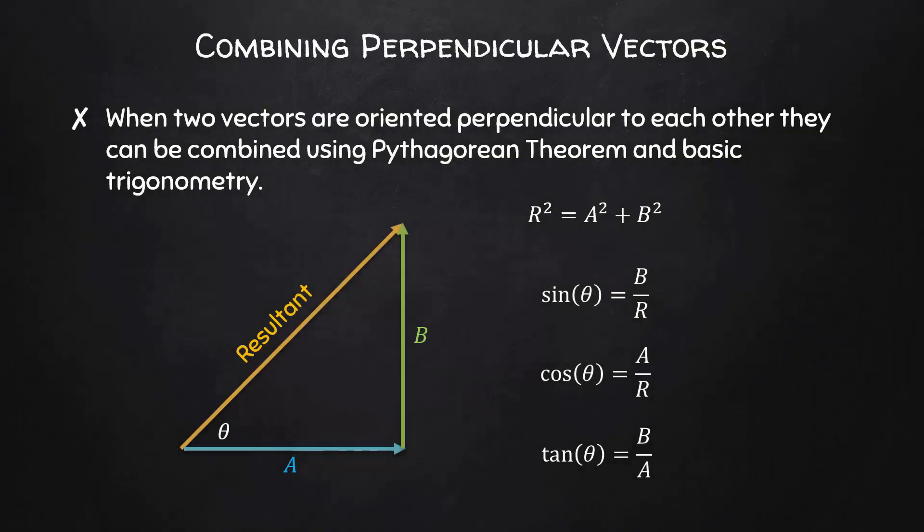When the component vectors are oriented perpendicular to each other, we can use the Pythagorean theorem and basic trigonometry to determine the magnitude and direction of the resultant.